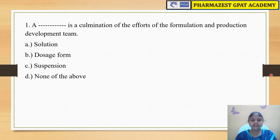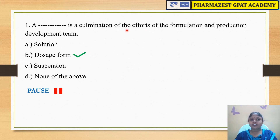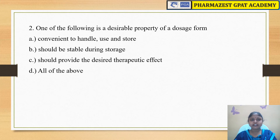The first question is: dash is the culmination of the efforts of the formulation and production development team. The options are A) solution, B) dosage form, C) suspension, and D) none of the above. The answer is dosage form. A dosage form is a culmination — it is the output of the efforts of the formulation team and the production development team.